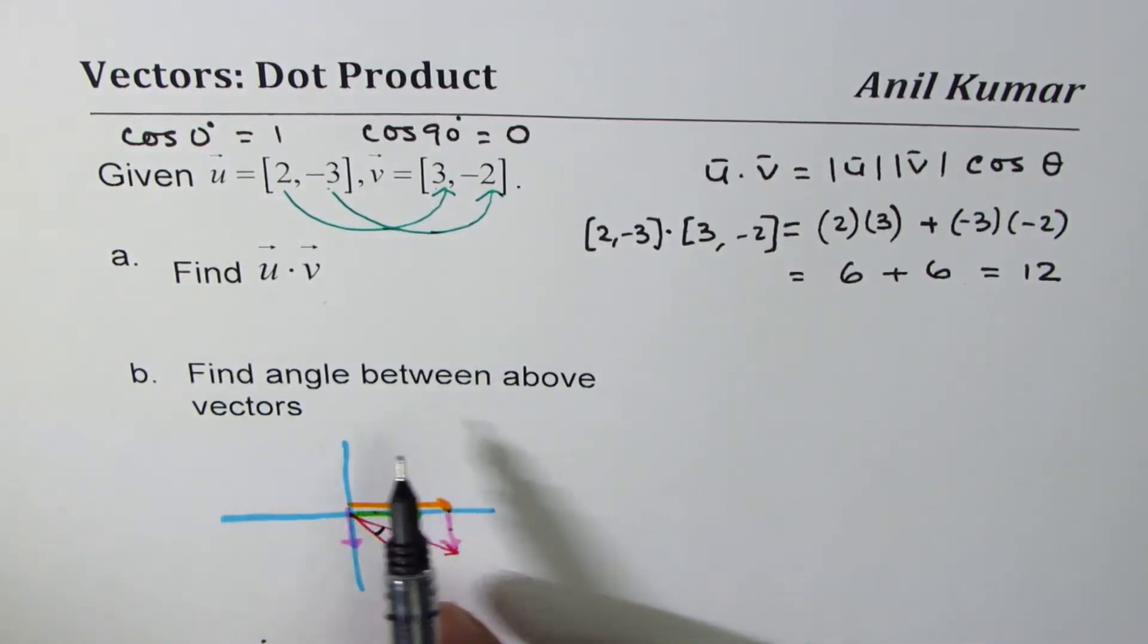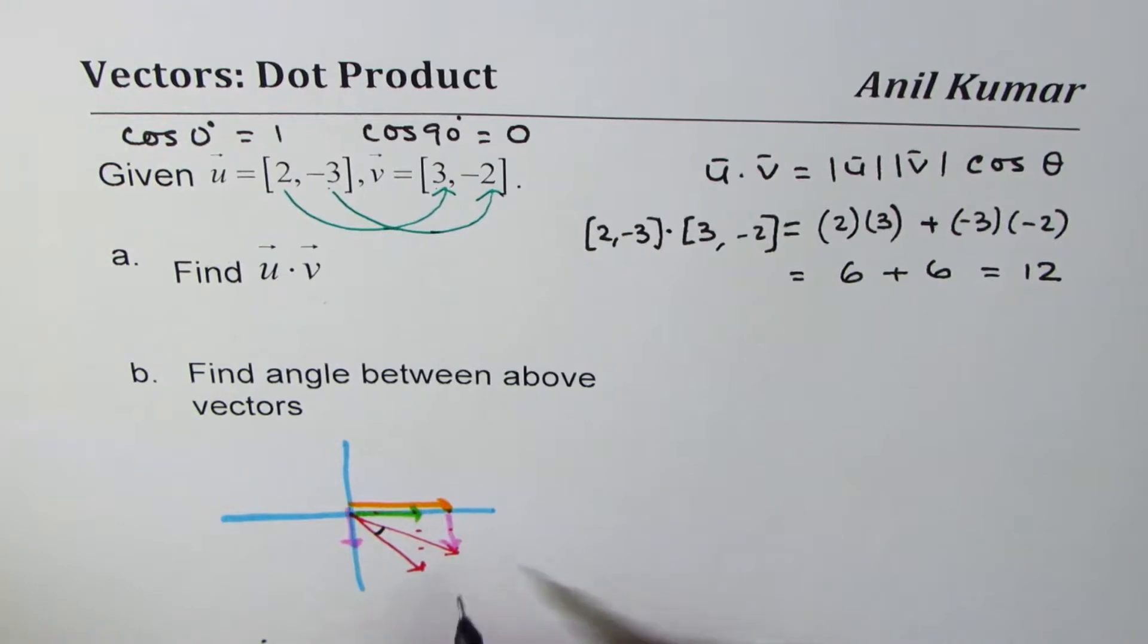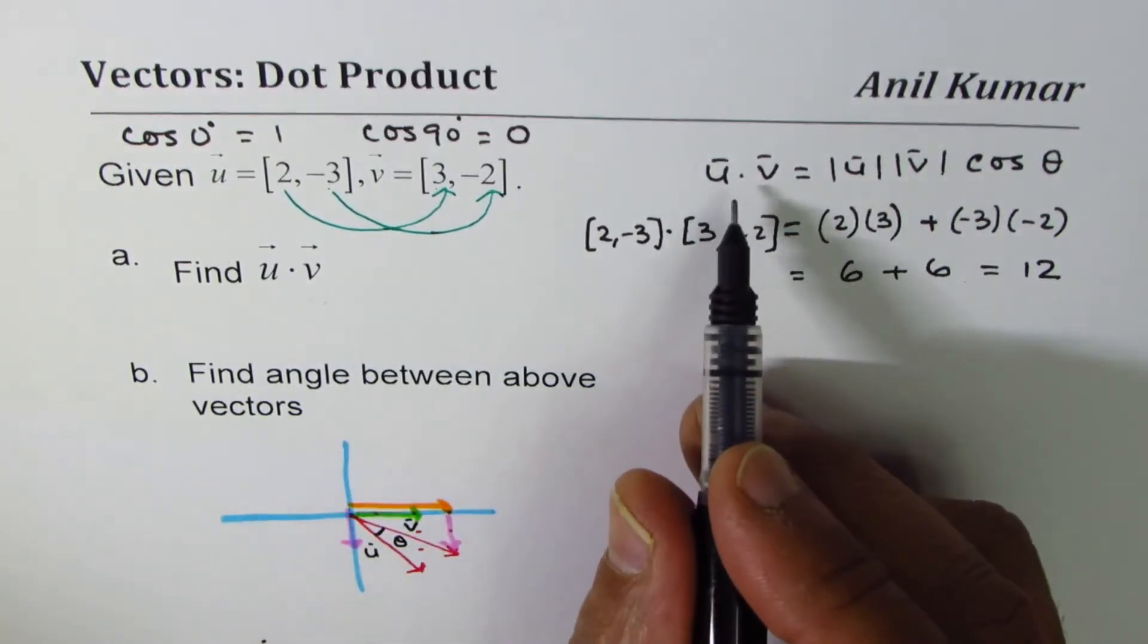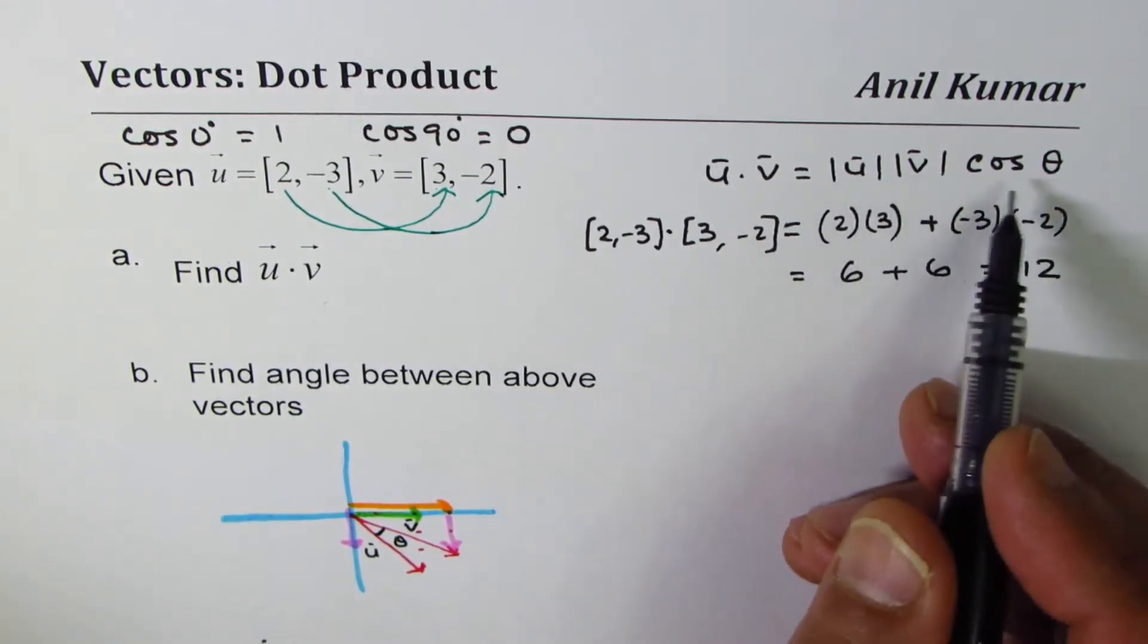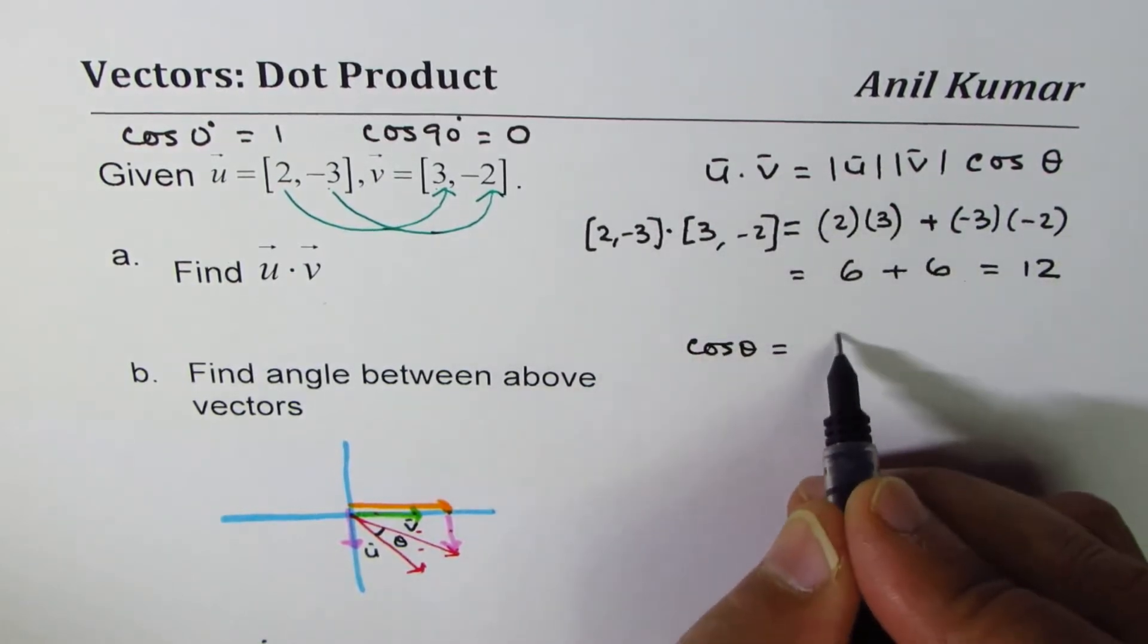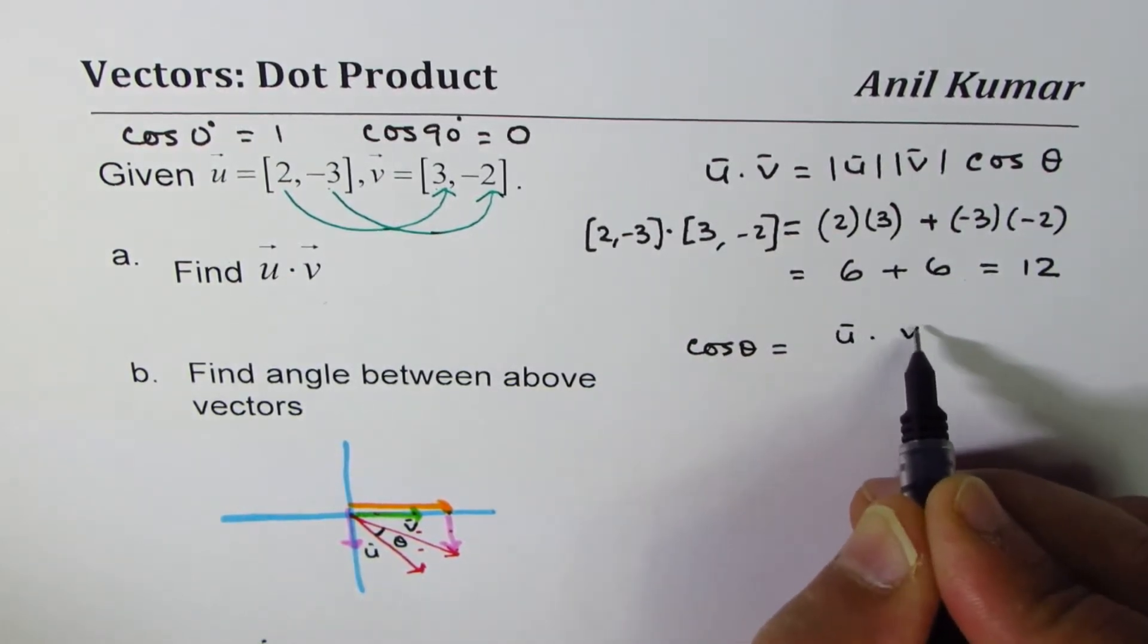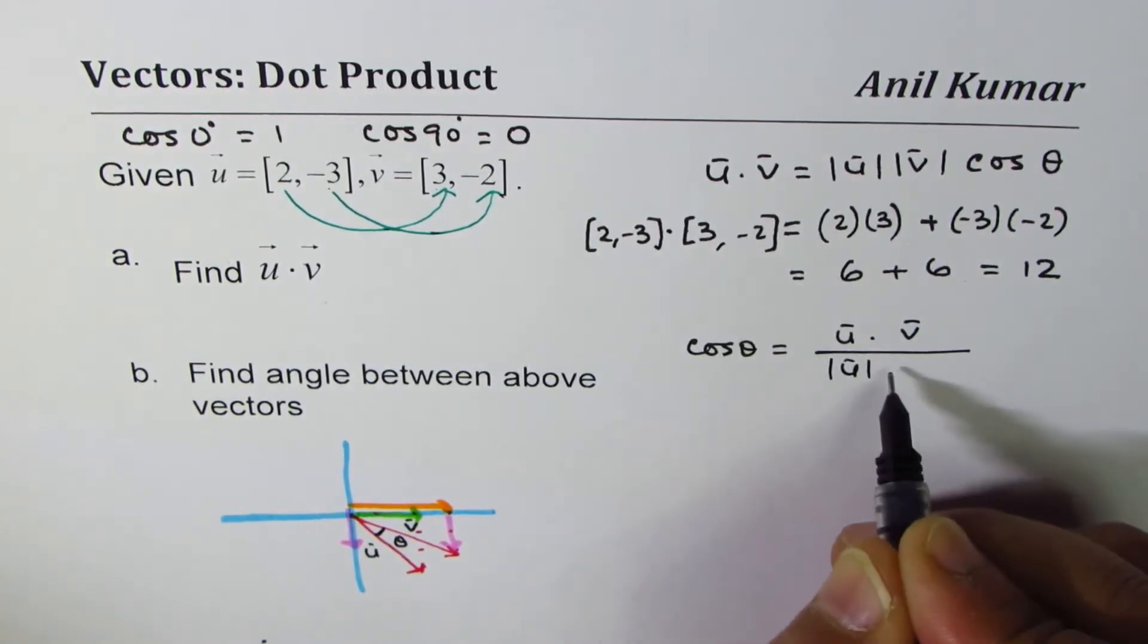Now part two is find angle between the above vectors. I just showed you these vectors: that is our vector u, this is vector v, angle between them let's say is theta. So the formula is u dot v is |u||v| cos theta (magnitudes), so cos theta could be written as dot product of the two vectors divided by their magnitude product.